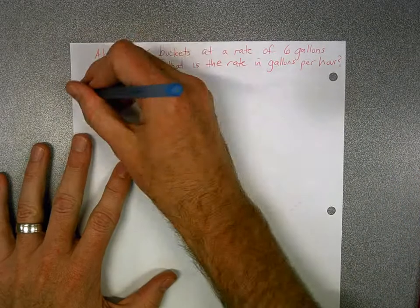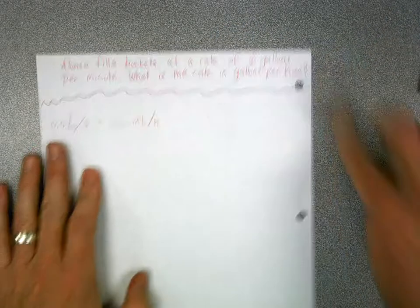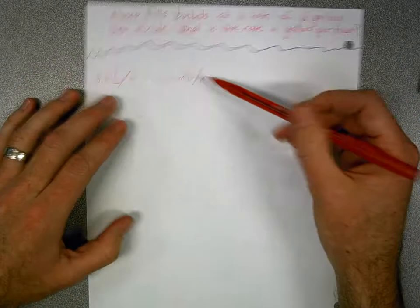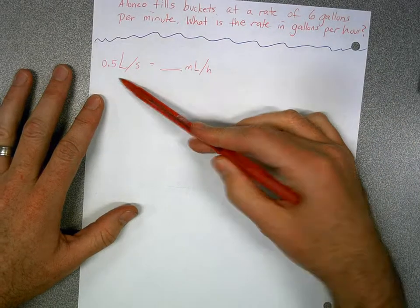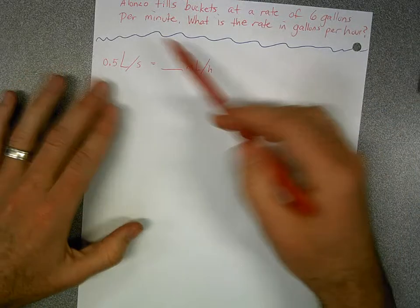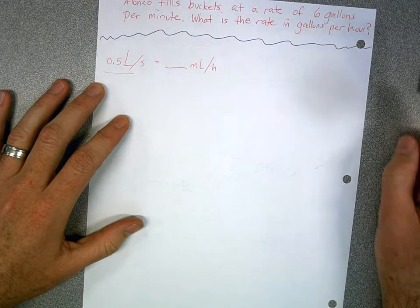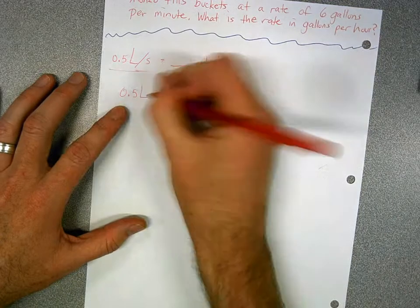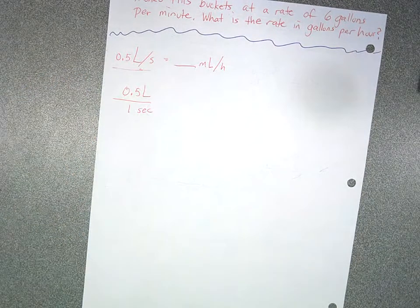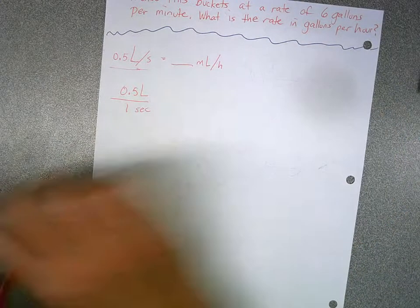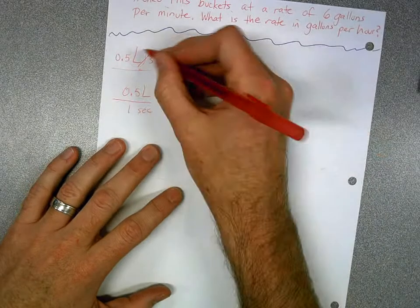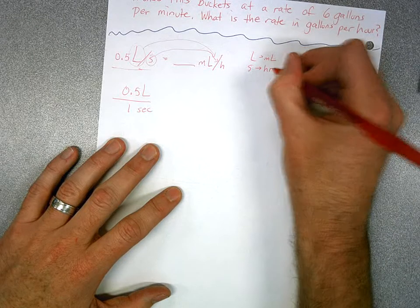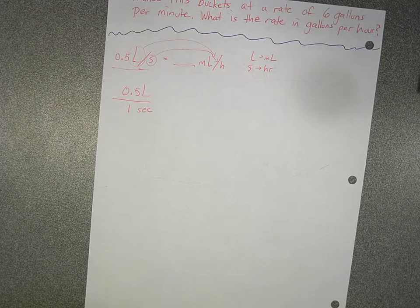Okay, I kind of let some of our conversations go along because I could see that people were helping others out — that's okay. So here we go. Step one: I'm going to write down what we have as a unit rate in fraction form. We have 0.5 liters per second, so over one second. Now I ask myself: what are we going from? I'm going from liters to milliliters, and from seconds to hours.